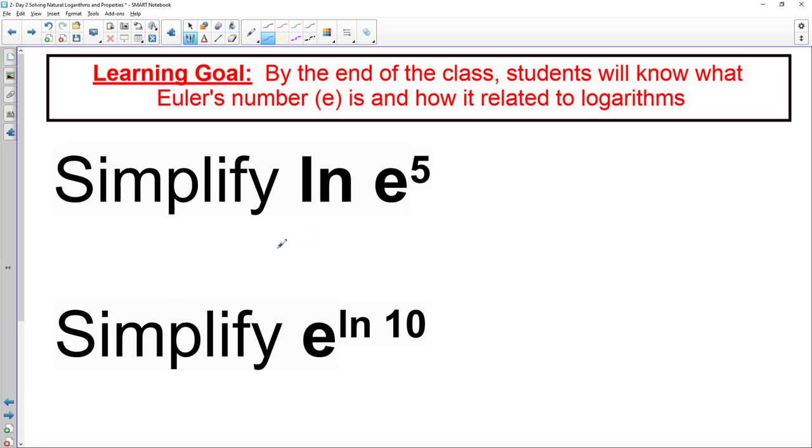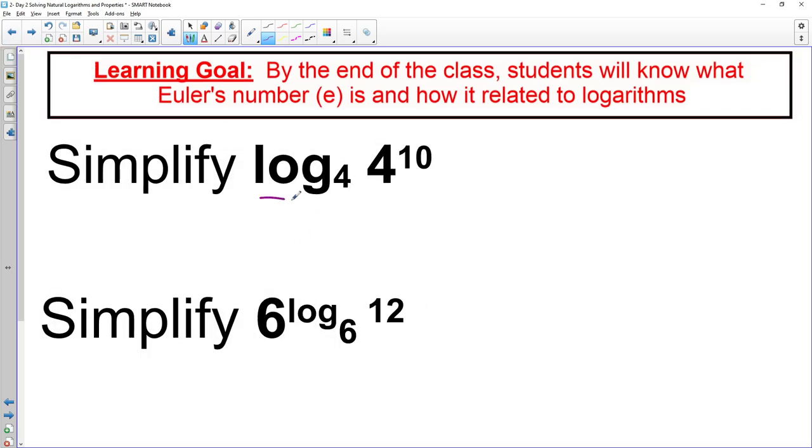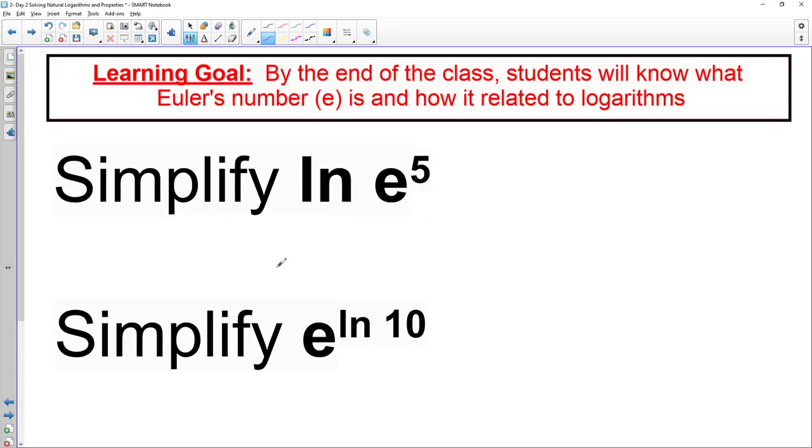Big idea here - if I were to go back to logs, if I have a log with a base of 4, and inside of that I have a base of 4, they just really cancel each other out, and my answer here would just be a 10. I can do the same thing with ln and e - if I were to have an ln and an e, which are opposites of each other, they would cancel each other out, and it would just leave behind the 5. E with an ln would do the same thing and it would just leave behind the 10. So you might come across a problem that is a natural log problem, but it contains an e inside of it.